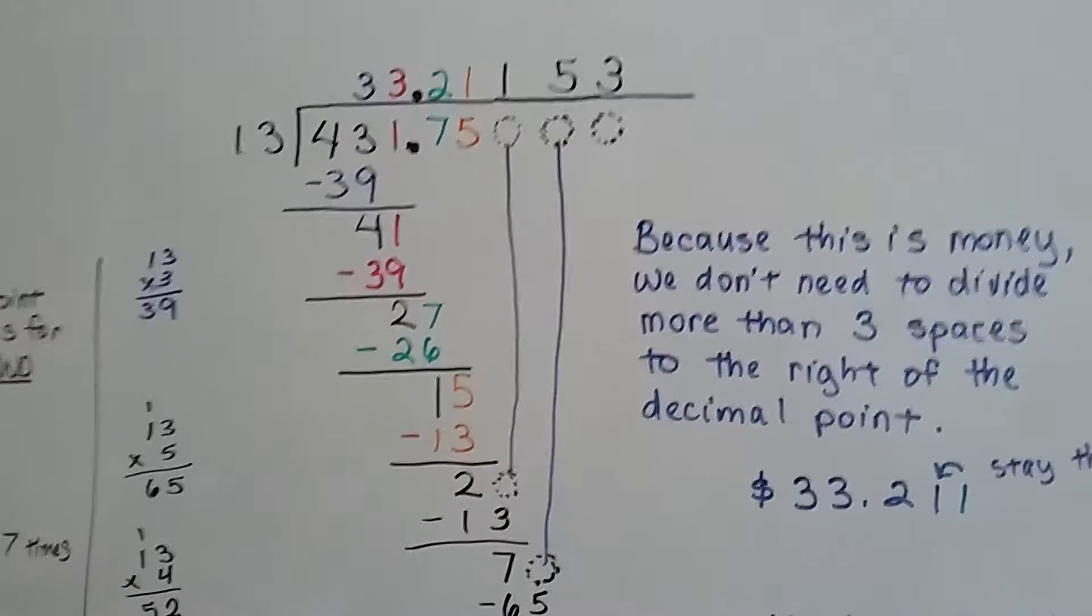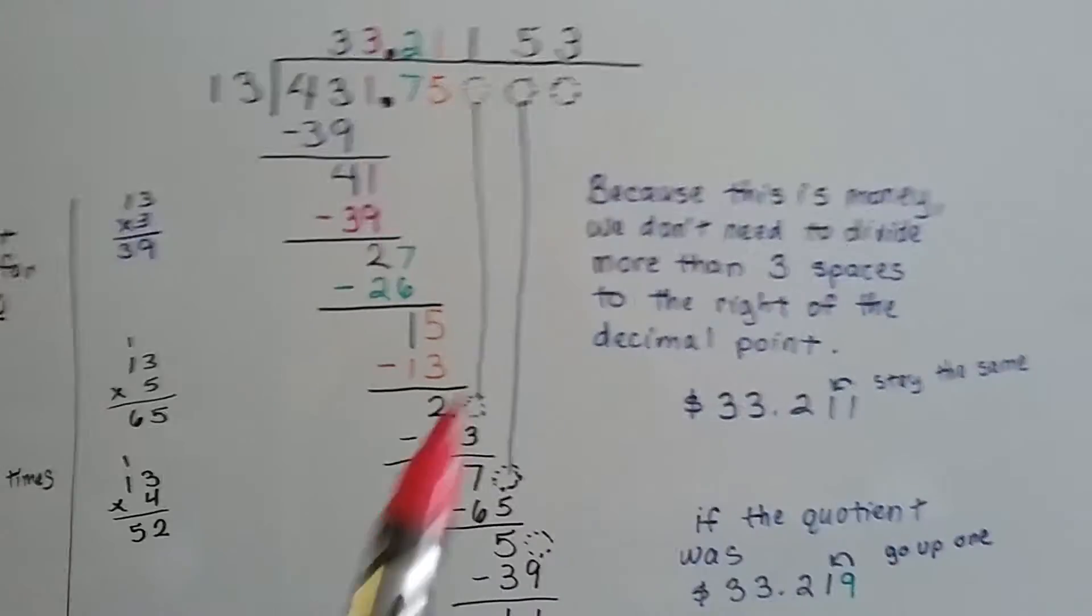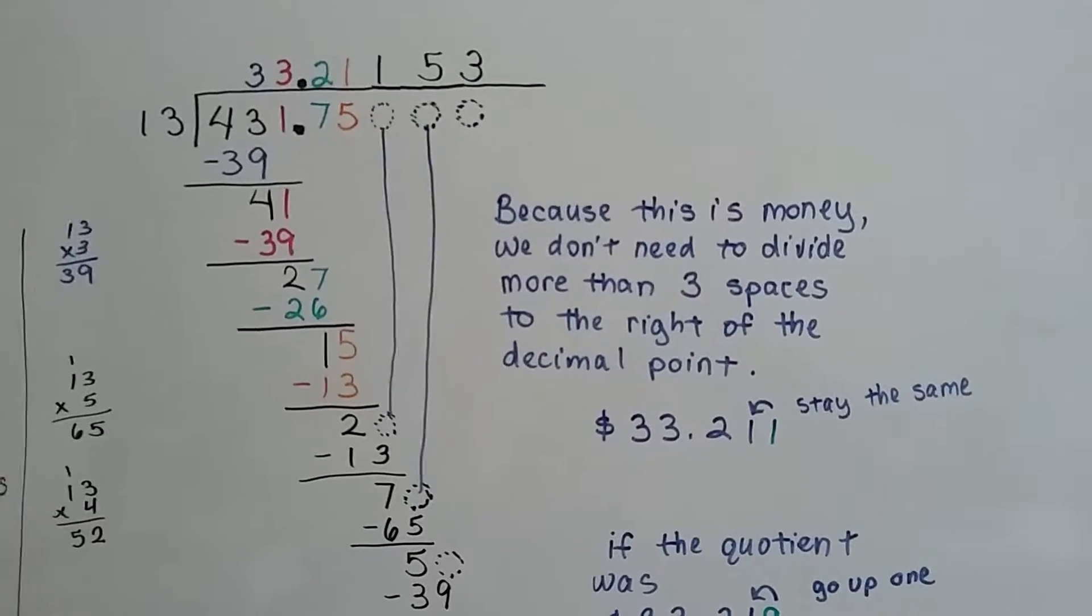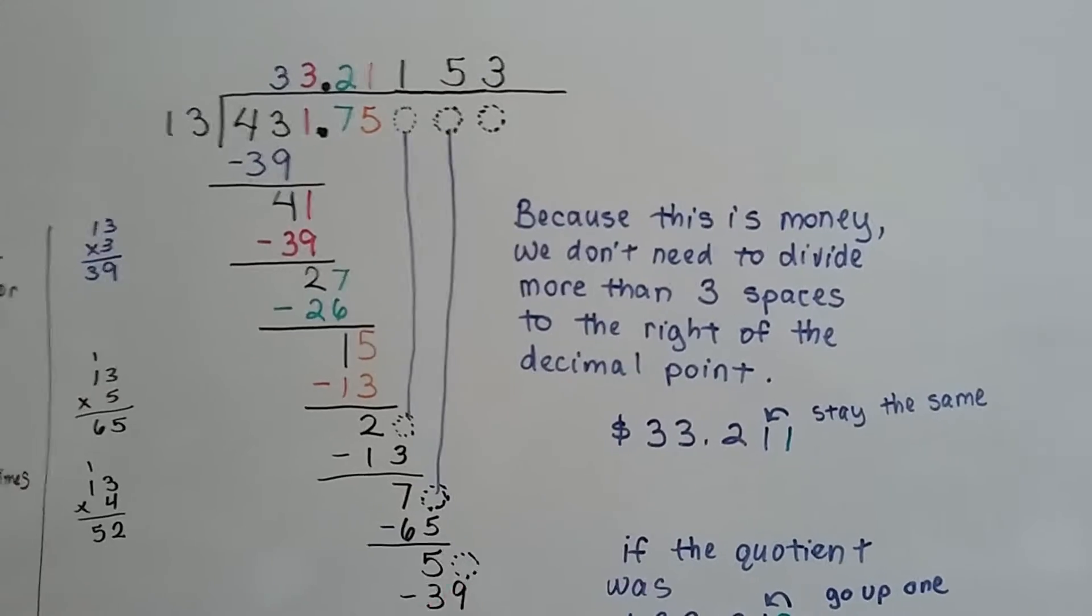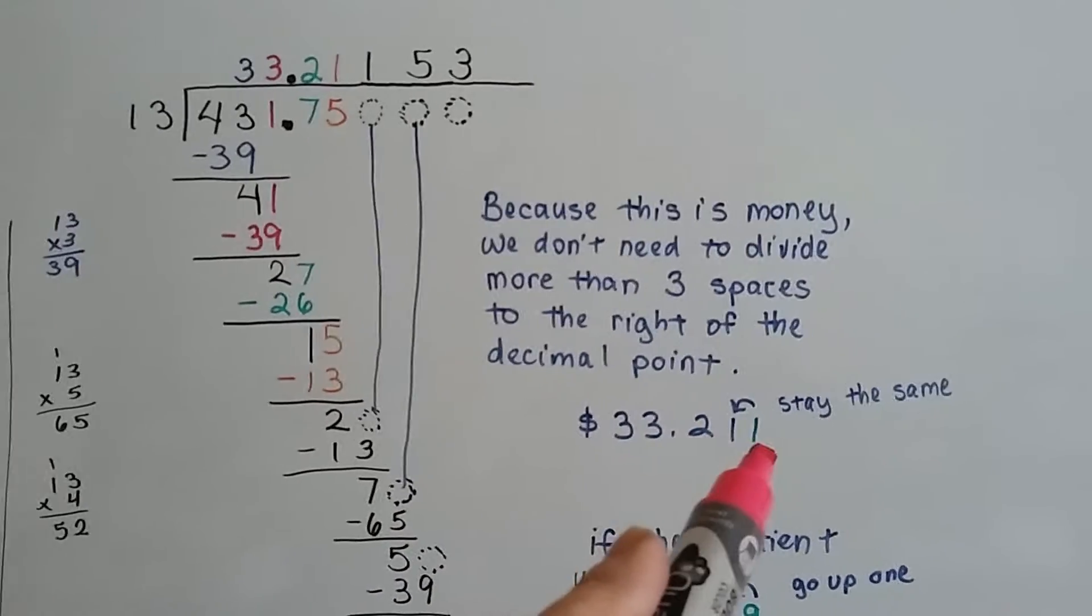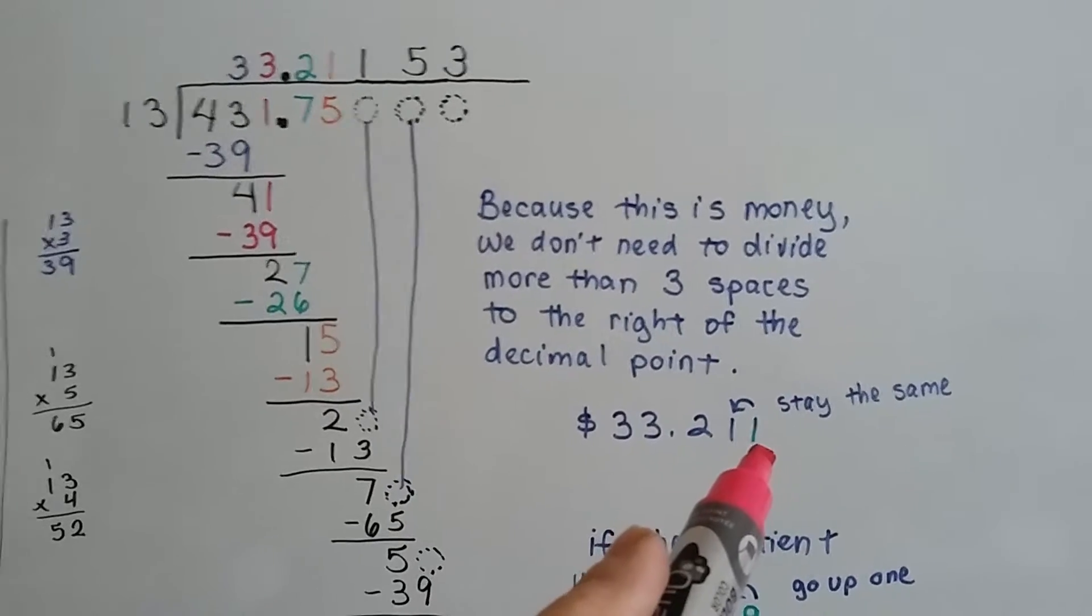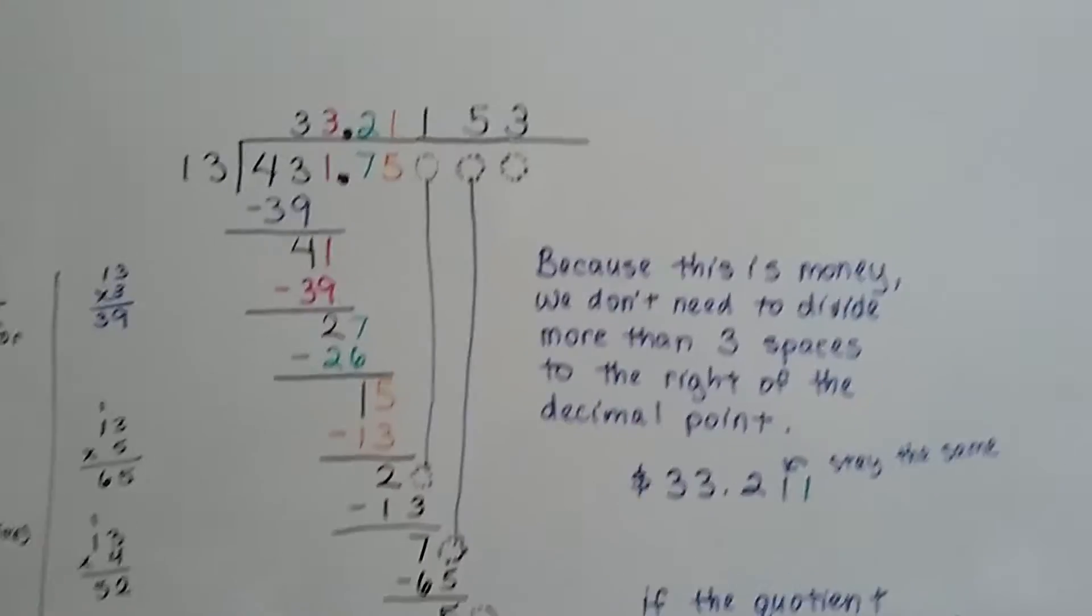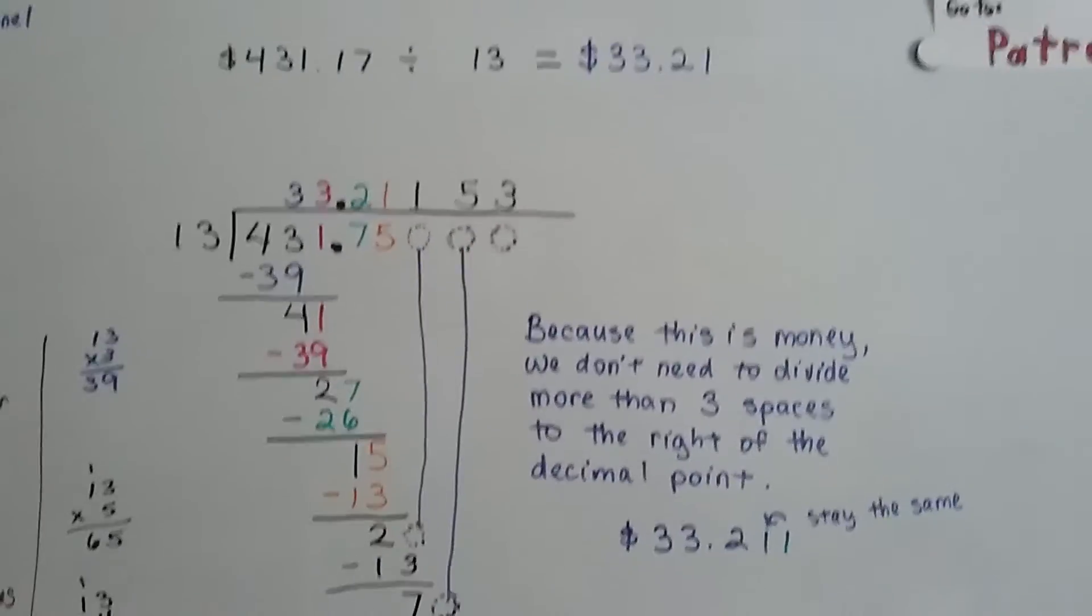We could keep going to see if it comes out to an even amount. But because this is money, we don't need to divide more than 3 spaces to the right of the decimal point. $33.21 with this 1,000th of a penny, this 1 tells that 1 to stay the same. So we end up with $33.21.